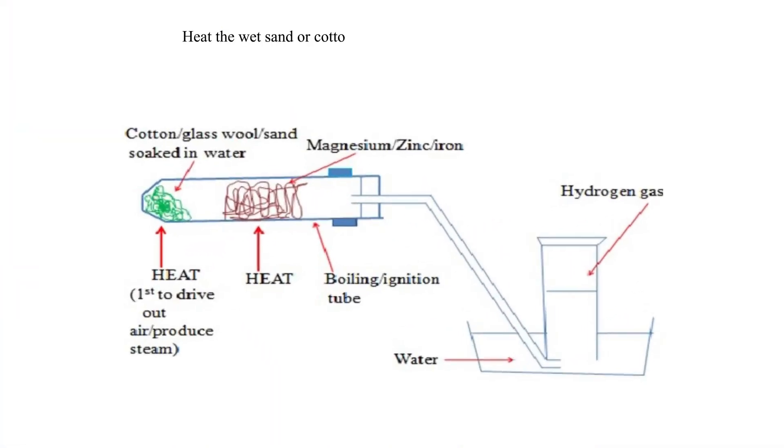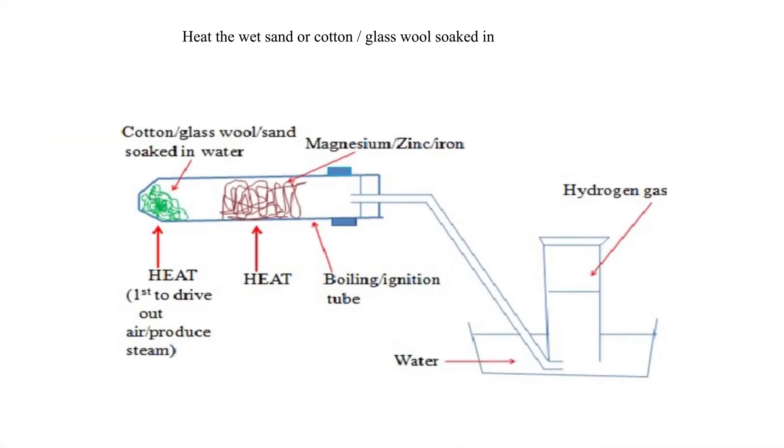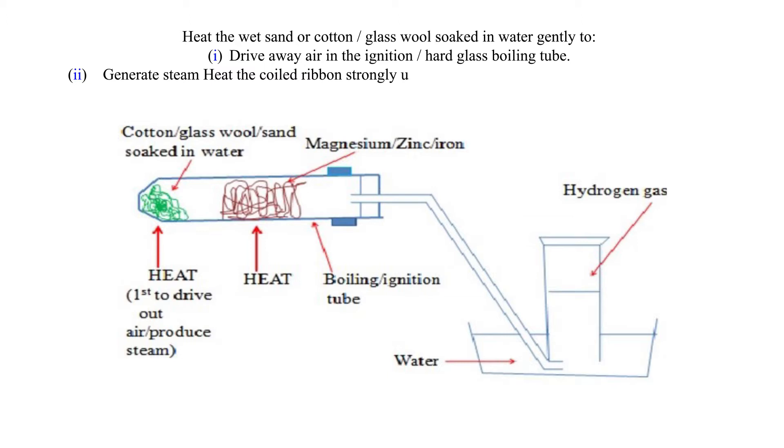Heat the wet sand or cotton or glass wool soaked in water gently to drive away air in the ignition or hard glass boiling tube. Generate steam, heat the coiled ribbon strongly using another burner.